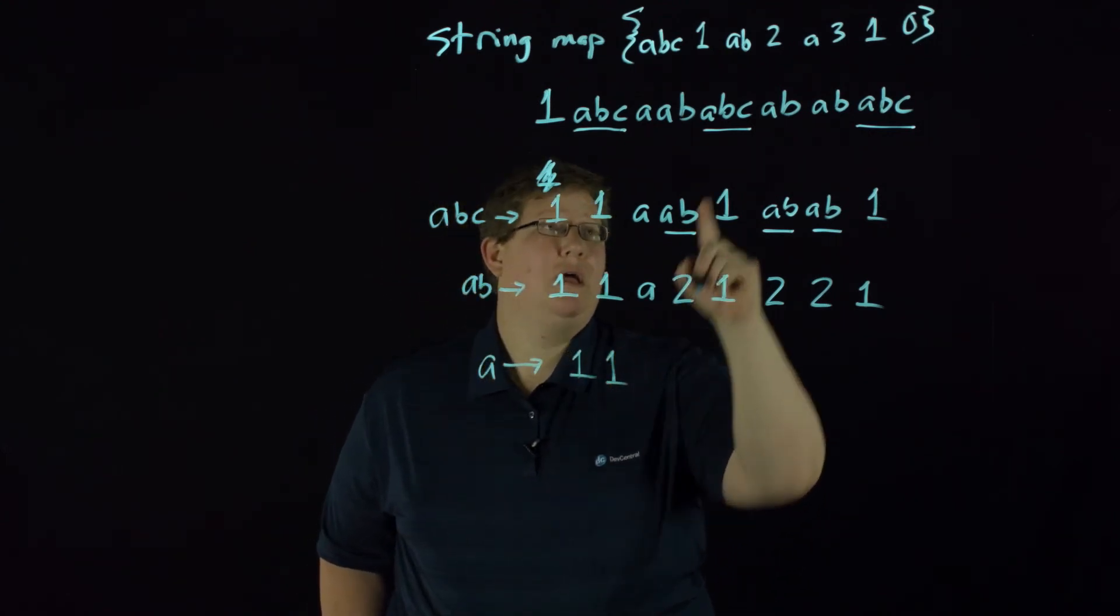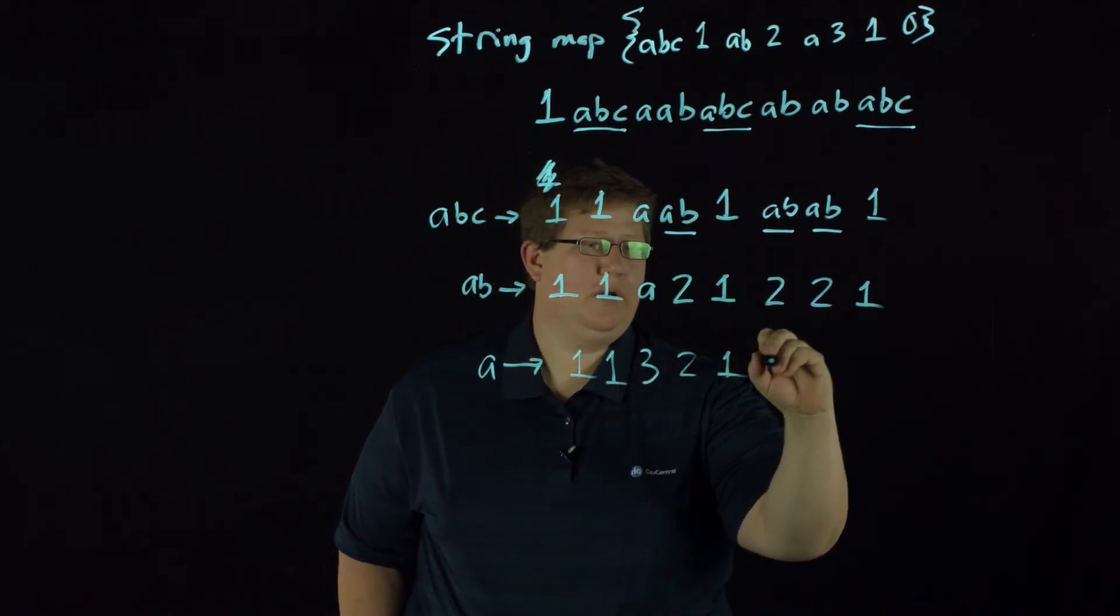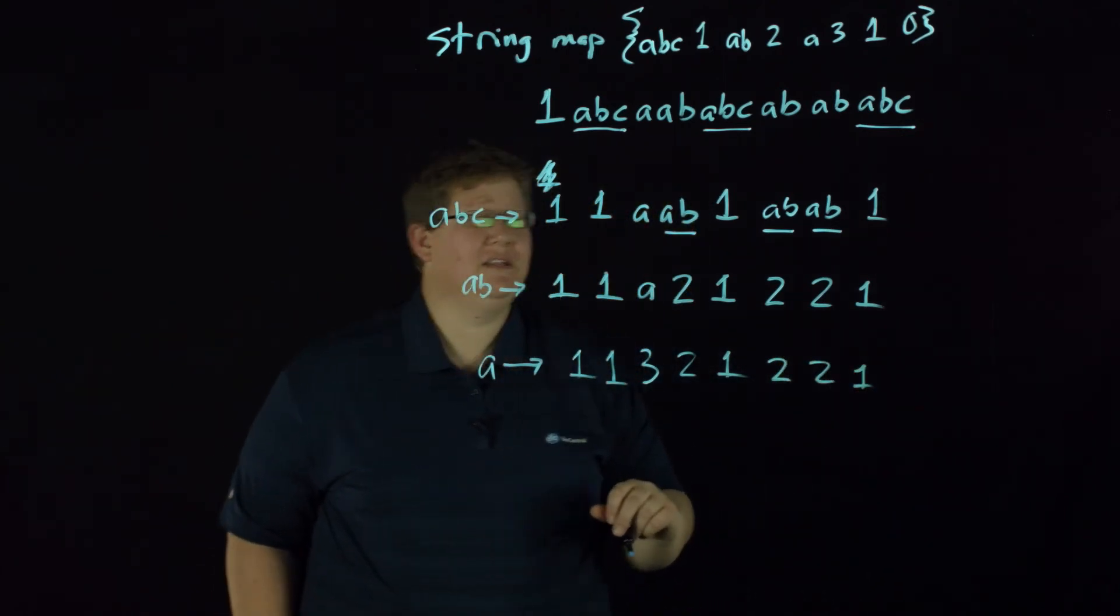So we'll do A, and then we still have our other matches. A becomes three, and we have our two one two two one.